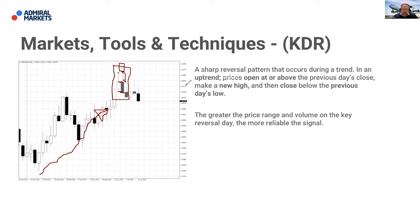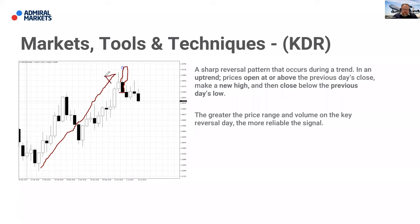Think about what has actually happened: price has just gone to new highs, sucking in all these new buyers, and then the bears have stepped in and sold hard. They have effectively wrestled control of that market. When you're looking at this, it means this uptrend is either now over or very close to its end. It gives us a compelling change in the narrative — a real psychological indication of who is now stepping in to take control. The bulls are losing control and the bears are taking control.